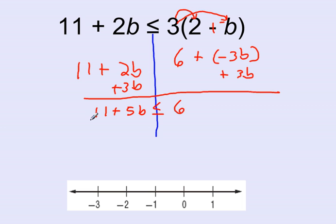My next step is to then move the 11 to the right. To move 11 over to the right, I do the same thing. I'm going to add its opposite. And I get 5b is less than or equal to, well, 6 plus negative 11 is negative 5.